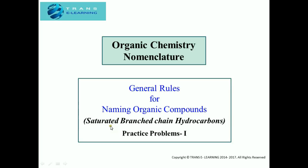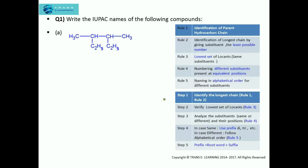Let's see what questions we'll be covering in this video. We will be following steps, and in every step we'll be following the rules to write the IUPAC name. The first step is to identify the longest chain, following Rule 1 and Rule 2. Rule 1 says we need to identify the parent hydrocarbon chain, and this longest chain should be identified such that the substituents get the least possible number.